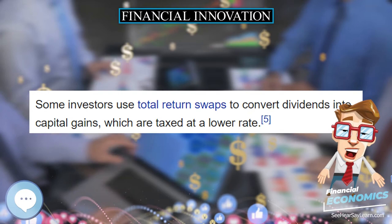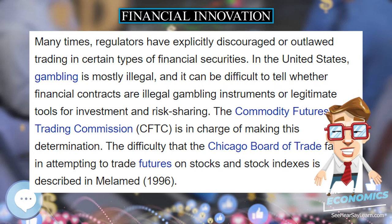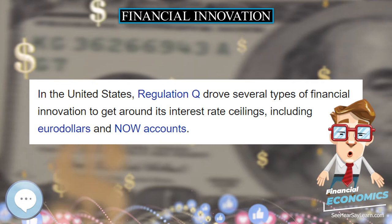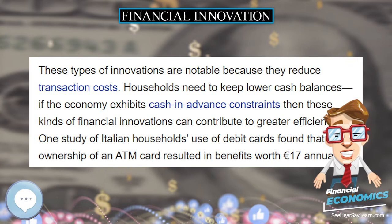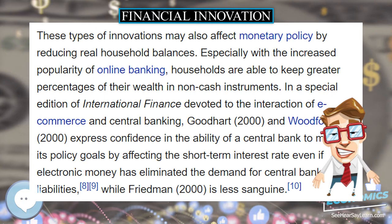Black and Scholes (1974) describe some of the difficulties they encountered when trying to market the forerunners to modern index funds. These included regulatory problems, marketing costs, taxes, and fixed costs of management, personnel, and trading. Shiller (2008) describes some of the frustrations involved with creating a market for house price futures.